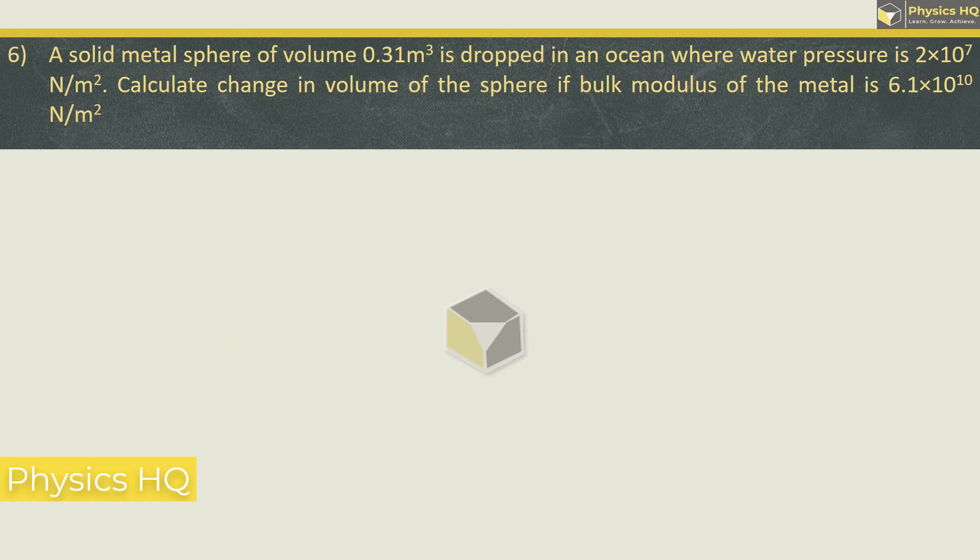A solid metal sphere of volume 0.31 meter cube is dropped in an ocean where water pressure is 2 into 10 raised to 7 newton per meter square. Calculate the change in volume of the sphere if bulk modulus of the metal is 6.1 into 10 raised to 10 newton per meter square. So here bulk modulus formula is K which is nothing but dp upon dv by V, where this is volume stress and denominator is volume strain.